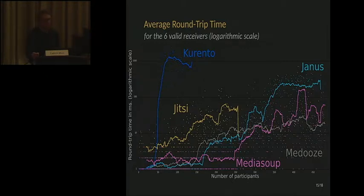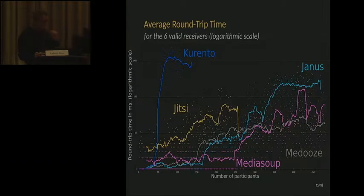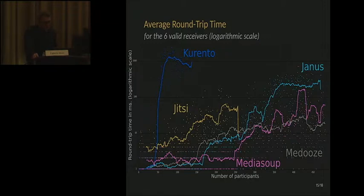This is the average round-trip time on the receiver side. As the load increases, the round-trip time increases as well. For Kurento, it increases a lot — it's a logarithmic scale, and very quickly Kurento has a round-trip time of one second. For the other media servers, they roughly behave more or less the same. Jitsi has a bit longer RTT than the three others, until it stops transferring data.